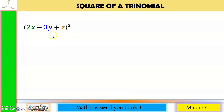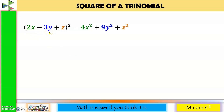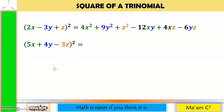Let's have some more examples. 2x quantity squared is 4x squared. Negative 3y quantity squared is positive 9y squared. z squared is z squared. Let's get a pair: 2x times negative 3y is negative 6xy, times 2 is negative 12xy. Another pair: 2x times positive z is positive 2xz, times 2 is positive 4xz. The last pair: negative 3y times z is negative 3yz, times 2 is negative 6yz.